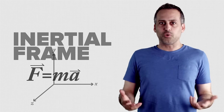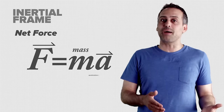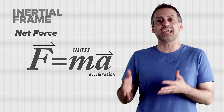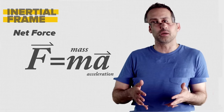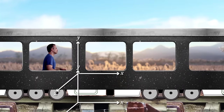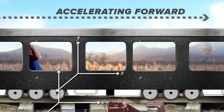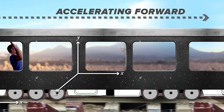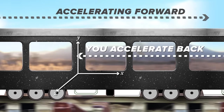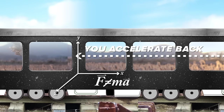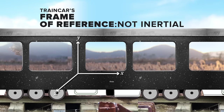The net force on an object will equal that object's mass times its acceleration only if you're measuring that acceleration using an inertial frame. For example, suppose that you're in a train car that starts accelerating uniformly forward along a flat track. Relative to the car's interior, you will accelerate backward, even though you can't identify any horizontal forces on you. So inside the train car, F decidedly does not equal ma, and the train car's frame of reference is not inertial.